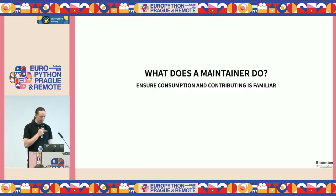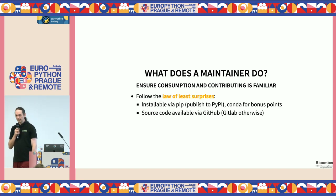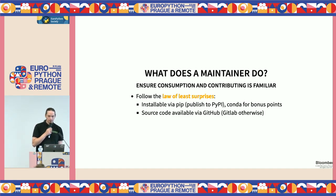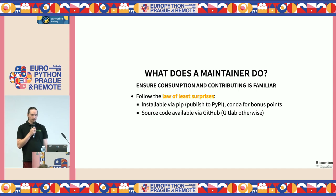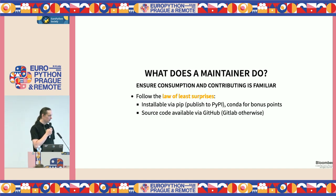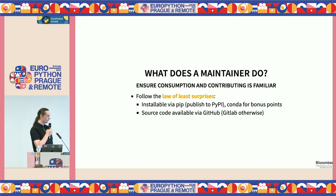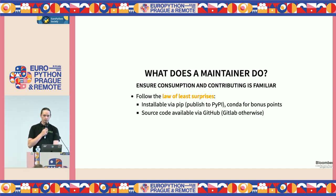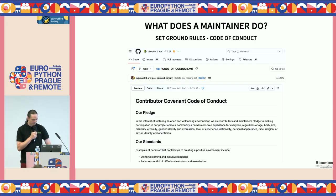Another job is to make sure the project is easy to consume. This means — and this is a recurring thought throughout this talk — follow the law of least surprises. Everything should be there and work as the user would expect. For publishing your package, that means it should be installable through pip, even via Conda for bonus points with the data science folks, and make sure the code is available — usually via GitHub. GitLab is also an option, but 90% of projects live on GitHub, so that's where people will search anyway.